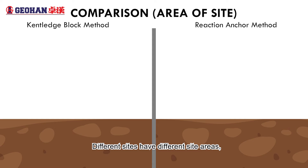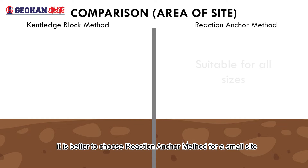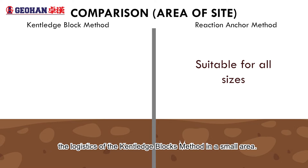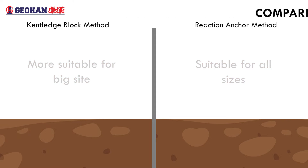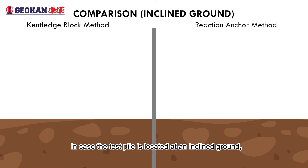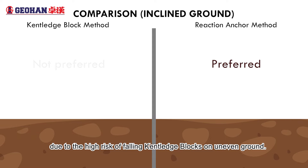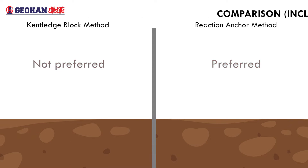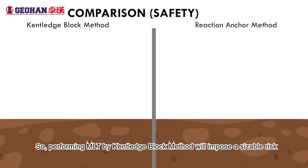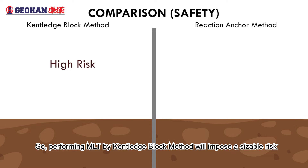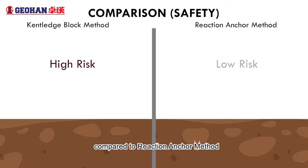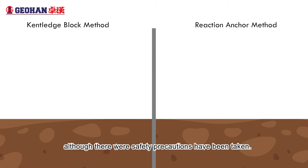Different sites have different site areas. It is better to choose the reaction anchor method for a small site, because it is much more difficult to manage the logistics of the cantilever blocks method in a small area. In case the test pile is located at an inclined ground, we might need to choose the reaction anchor method due to the high risk of falling cantilever blocks on uneven ground. Performing MLT by the cantilever blocks method will impose a sizable risk compared to the reaction anchor method, although safety precautions have been taken.